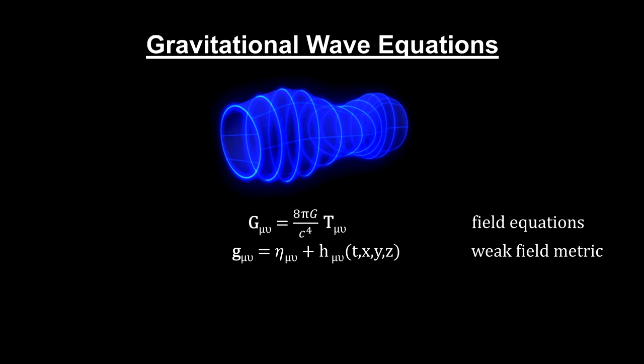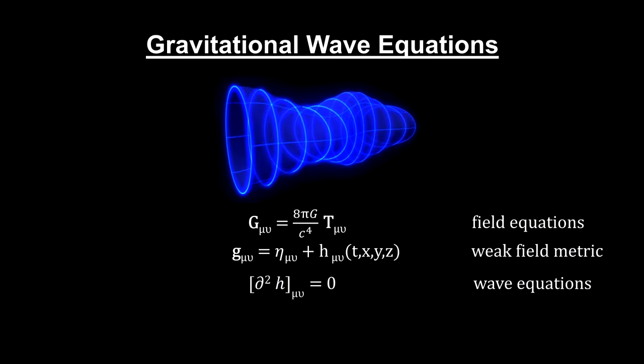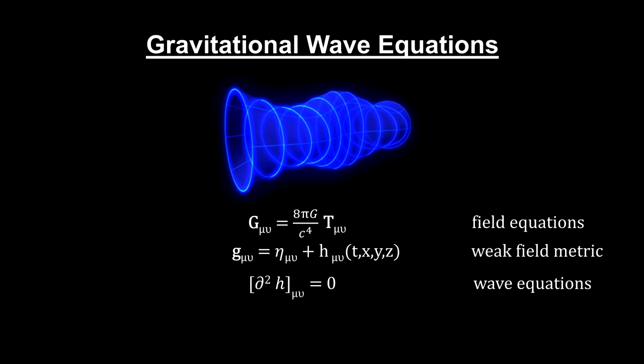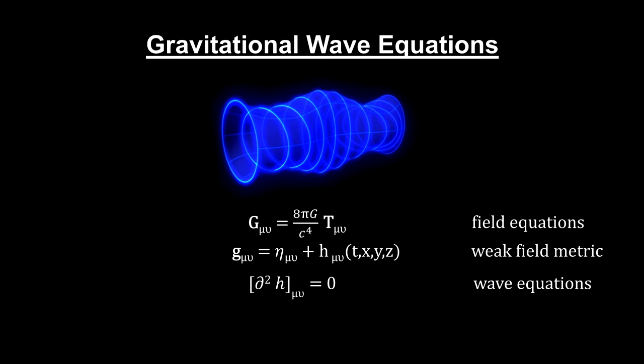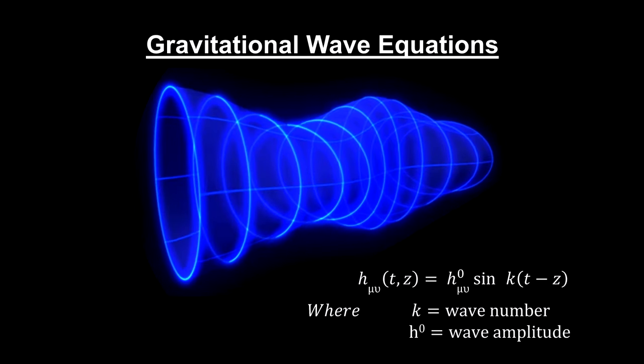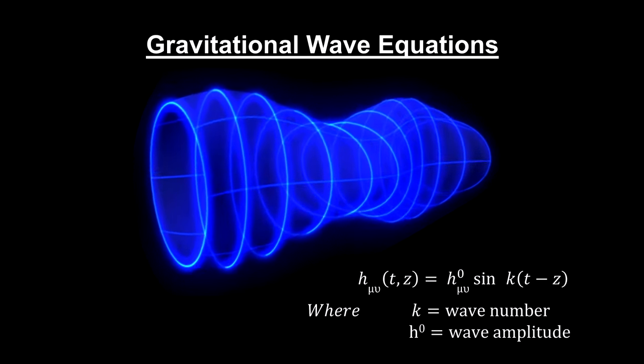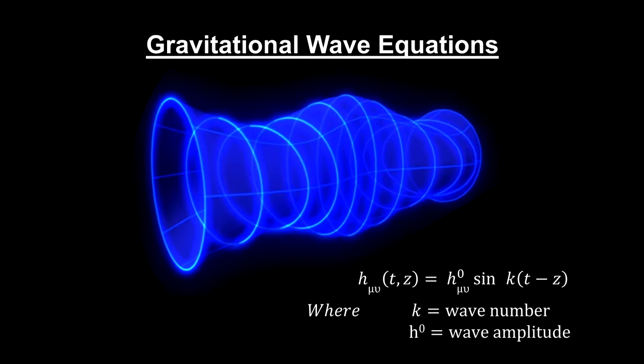A ripple represents small deviations from this flat spacetime metric. We use h to represent these deviations. Solutions to Einstein's equations show that a gravitational wave's metric oscillates sinusoidally, just like light.